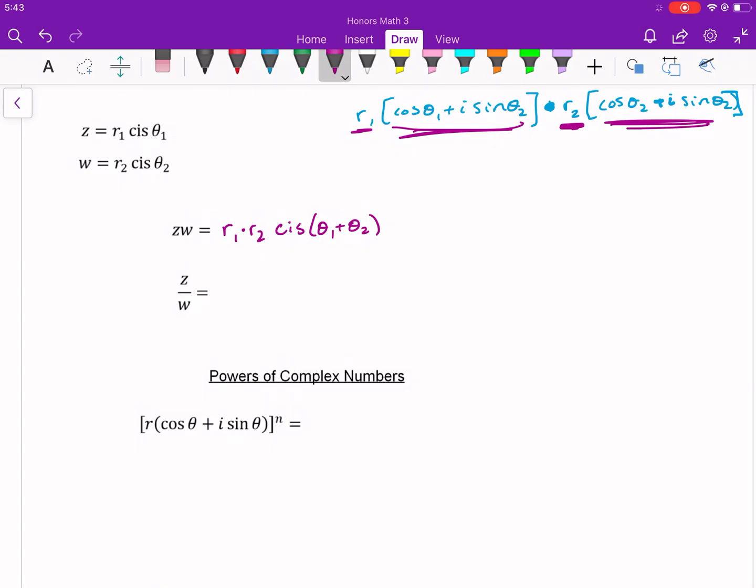Believe it or not, the division's not too much harder because you literally just divide instead. So r1 divided by r2, cis, and then instead of adding, we, you're right, subtract.